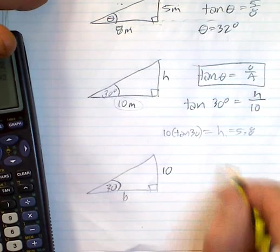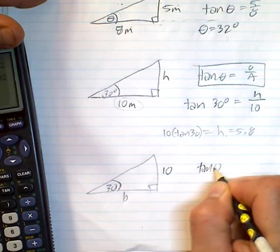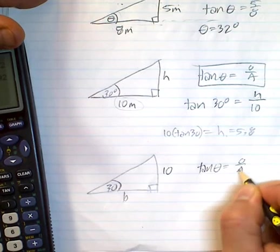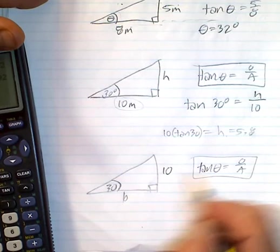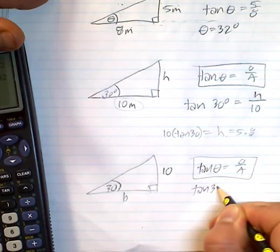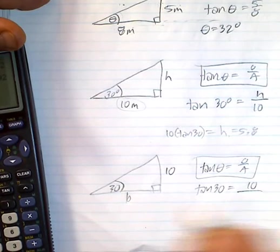We set it up exactly the same way. You say tan of theta equals opposite over adjacent. What do you have? You have theta because that's the angle. So you go tan 30 equals opposite over adjacent. You have the opposite, you're looking for the adjacent. Let's call it x.